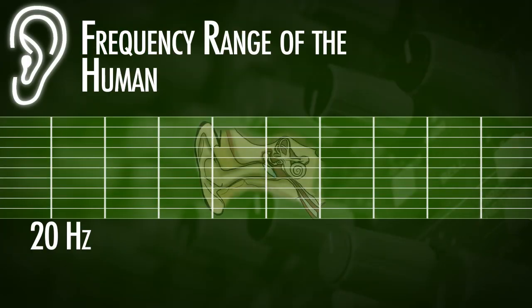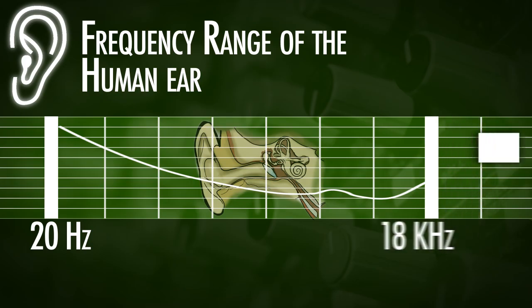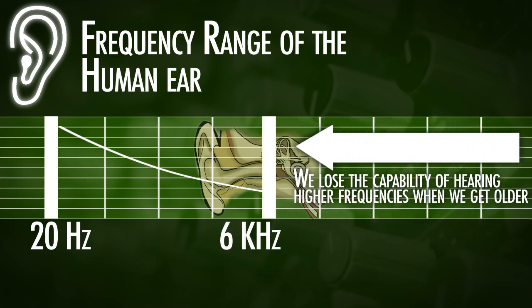The frequency range of the human ear ranges from 20 Hertz up to 20 kilohertz. We do lose some of our hearing capabilities when we get older, that's why elder people can't hear higher frequencies.